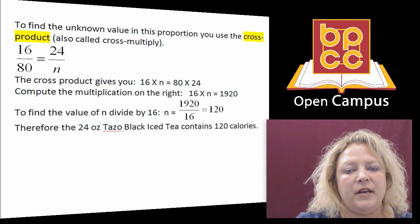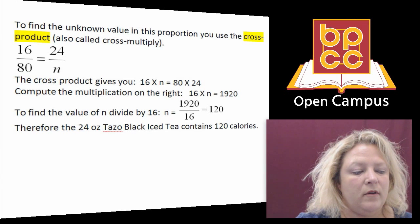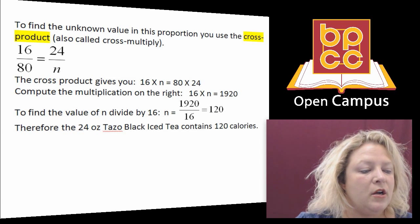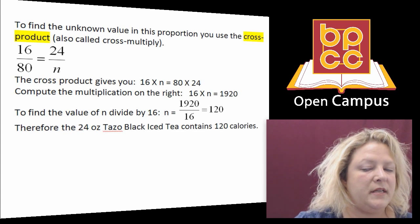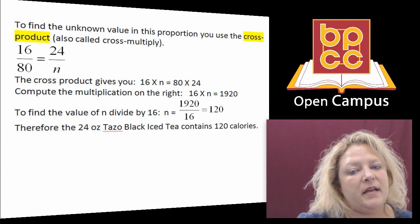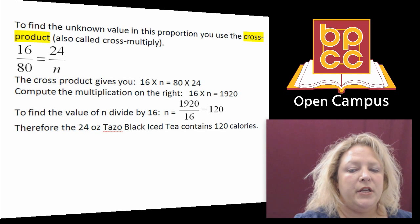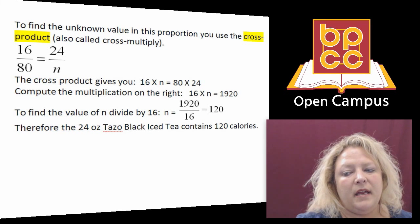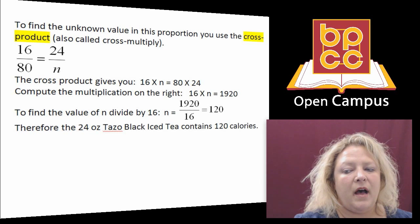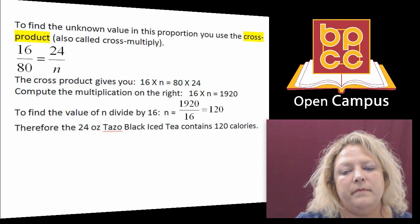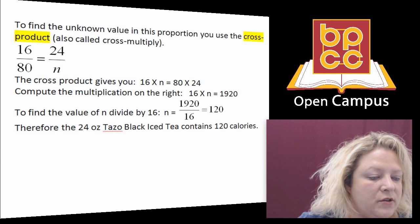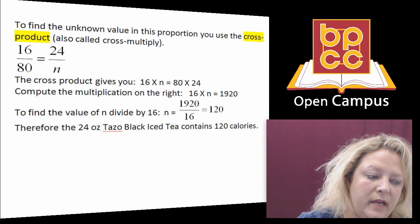How do you solve proportions? You solve proportions using cross products. Cross products means to multiply in the shape of an X, so you would do 80 times 24 and 16 times N, and then you would divide. 80 times 24, you'll see on the screen, equals 1,920.